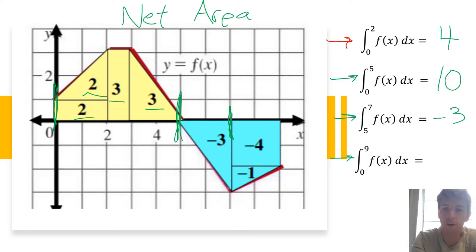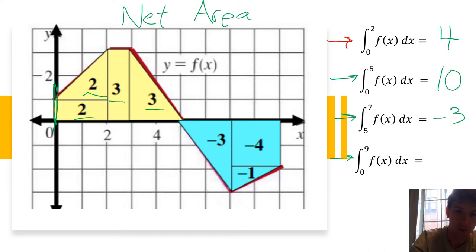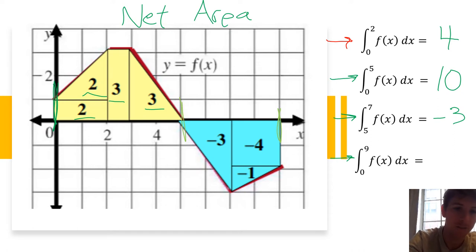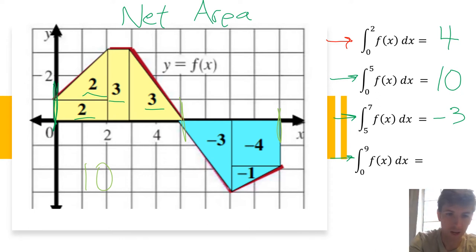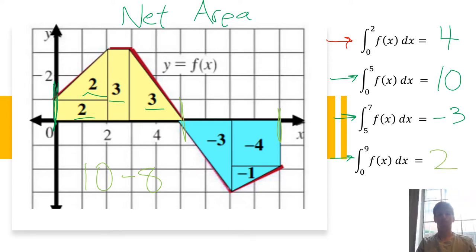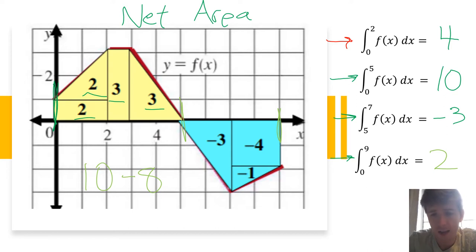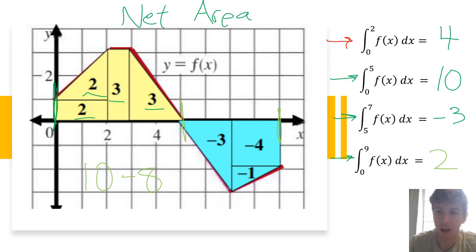Last one: from 0 to 9. We're interested in the entire function. From 0 to 5, it's 10. From 5 to 9, it's going to be negative 8. So it's just 10 minus 8, which equals 2. That's really what we're doing with the definite integral — calculating the net area between the function and the x-axis. It was easier here using geometry, but it's the same measurement as when we integrate.